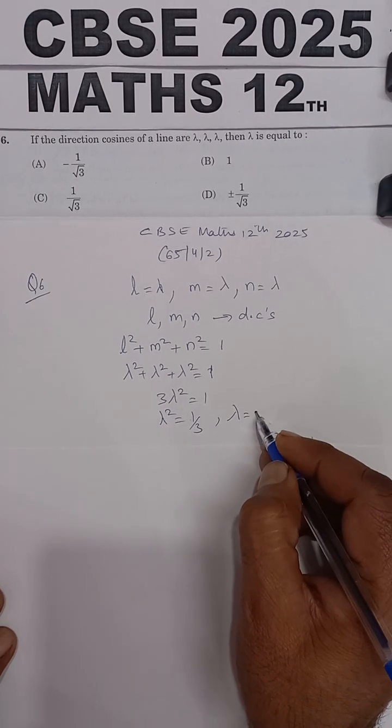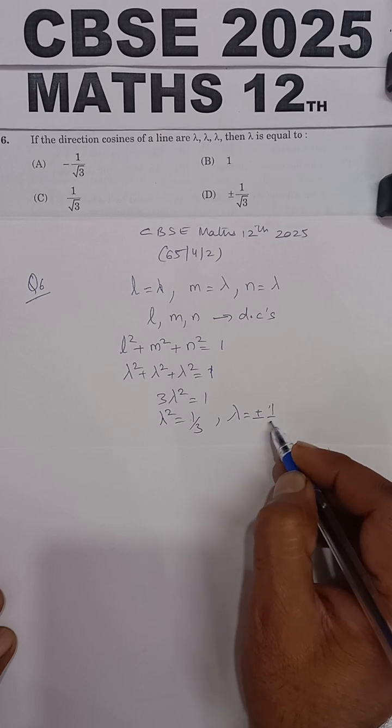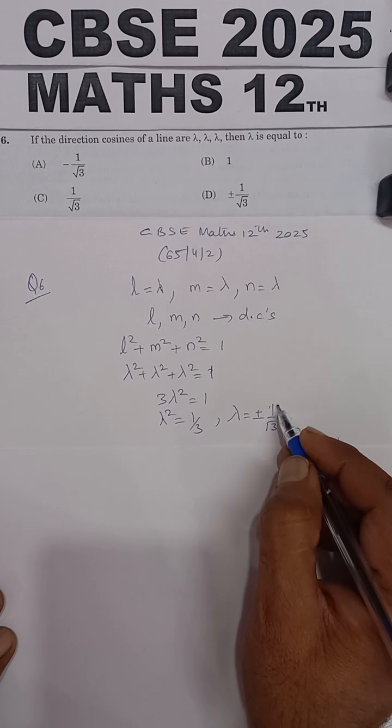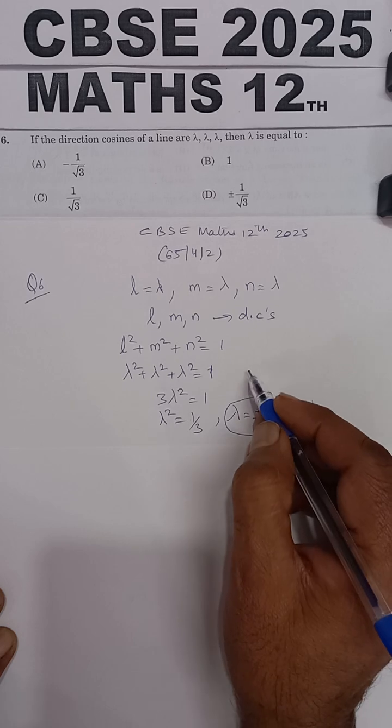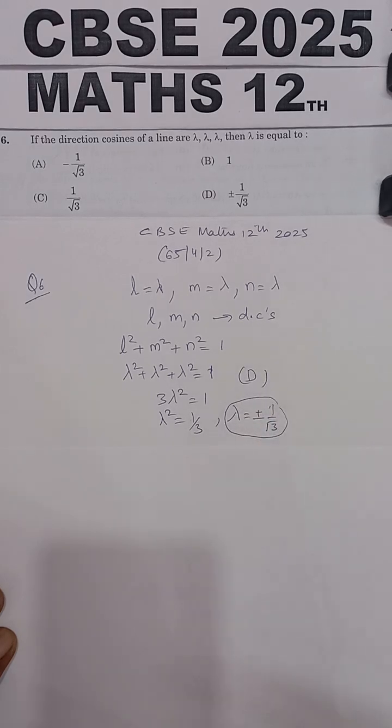Or lambda will be equal to plus or minus 1 upon root 3. This is the answer, and this is given in option D. So option D is the correct answer.